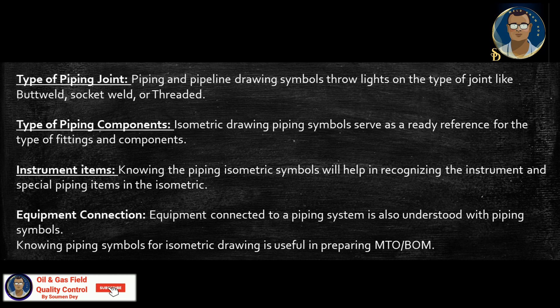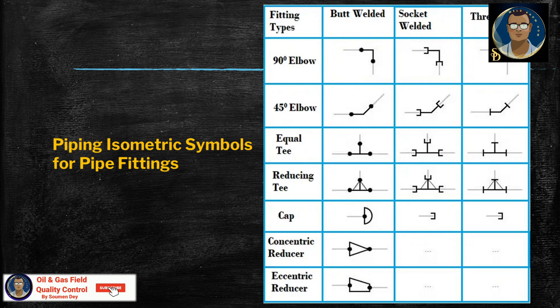Piping isometric drawing symbols serve as a ready reference for the type of fittings, components, and instrument items. Knowing the piping isometric symbols will help in recognizing instruments and special piping items in the isometric. Equipment connected to a piping system is also understood with the piping symbol. Knowing piping symbols for isometric drawing is also useful in preparing MTO or bill of material. You can see the symbols for pipe fittings and how they are represented.